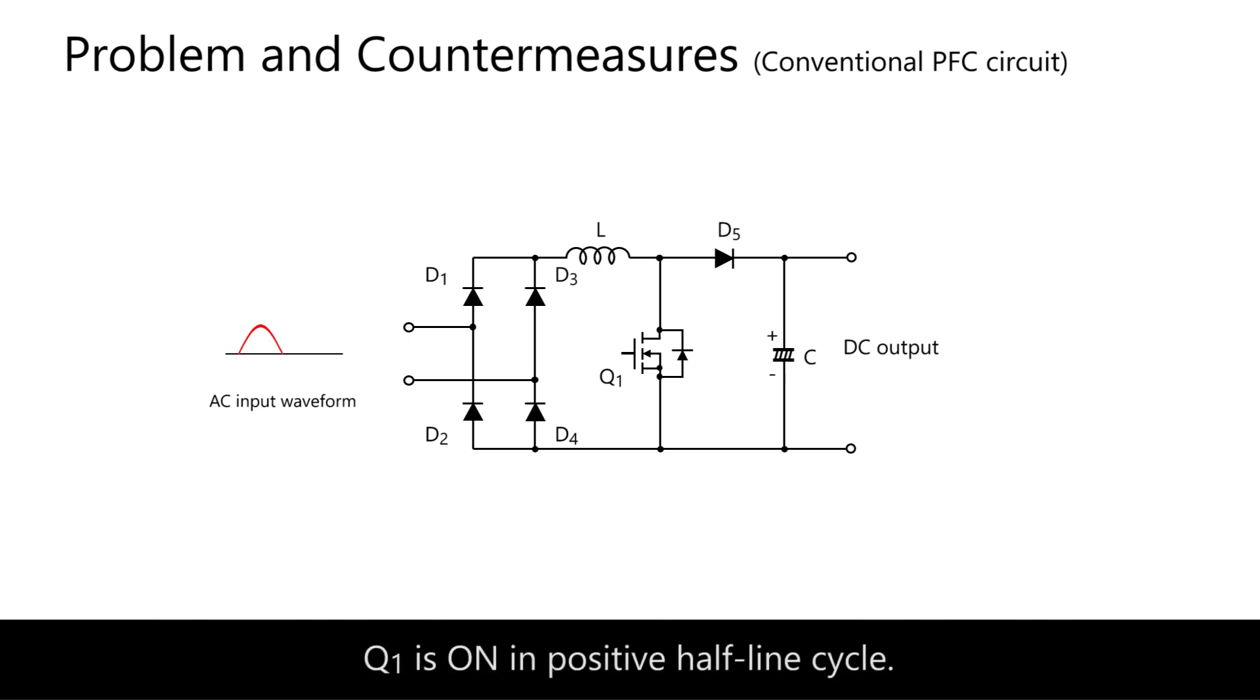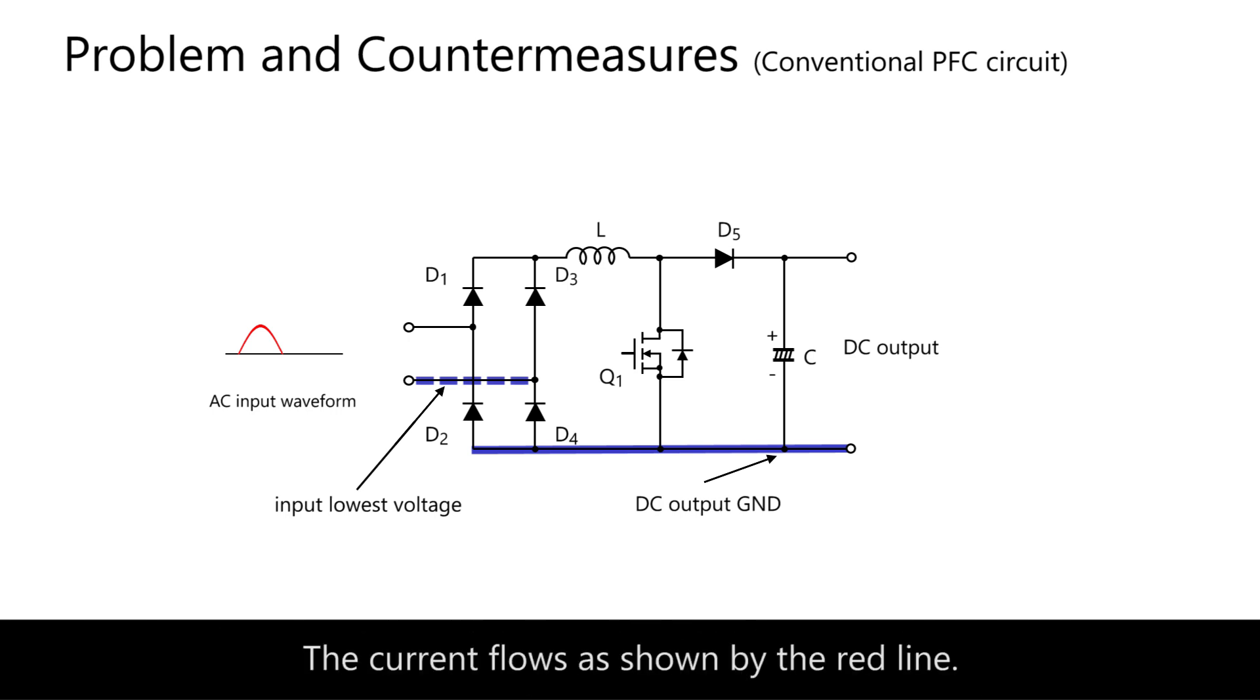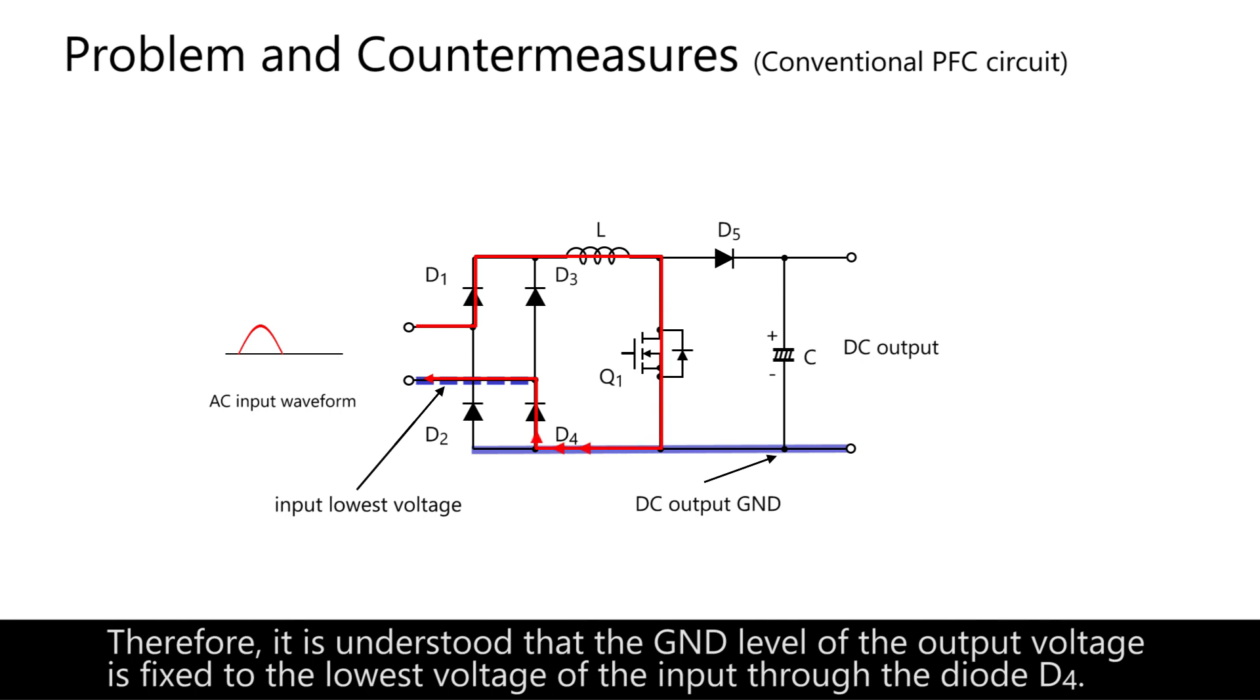Q1 is on in the positive half-line cycle. The input lowest voltage is on the lower terminal, and ground of DC output is also on the lower terminal. The current flows as shown by the red line. Therefore, it is understood that the ground level of the output voltage is fixed to the lowest voltage of the input through the diode D4.